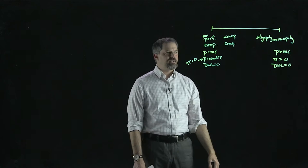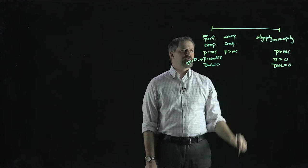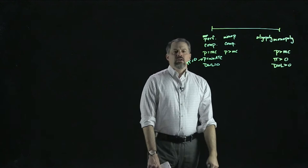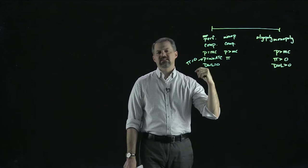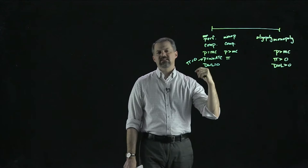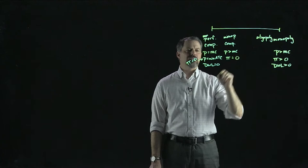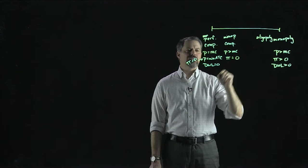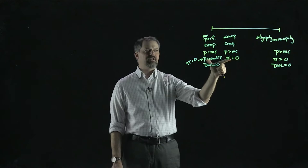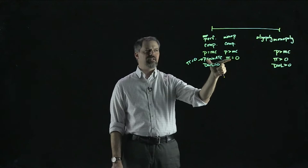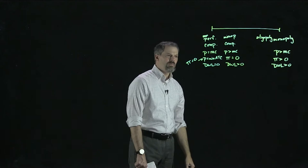Profit equals zero for perfectly competitive firms. For a monopoly, as long as there's strong demand, profit can be positive in the long run, and there is deadweight loss greater than zero. With monopolistic competition, price ends up greater than marginal cost — same as monopoly — and price is driven to equal average total cost but not the minimum average total cost. Monopolistically competitive firms produce with excess capacity and don't produce at their efficient scale, but free entry drives profit to zero.